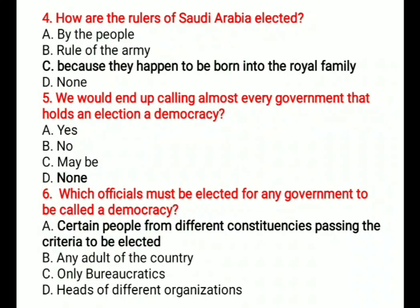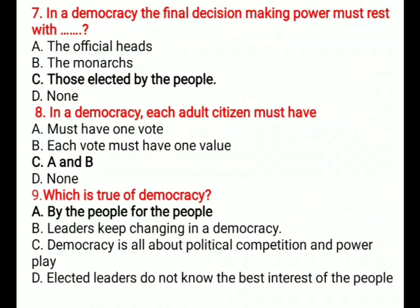Question 6: Which officials must be elected for any government to be called a democracy? Options are: A) Certain people from different constituencies passing the criteria to be elected, B) Any adult of the country, C) Only bureaucrats, D) Head of the different organizations. The correct answer is A, certain people from different constituencies passing the criteria to be elected.